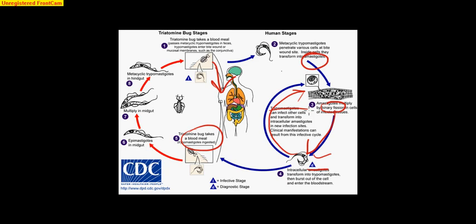Then this vector is going to take up another blood meal. So this is a different vector taking a different blood meal. Now this vector is carrying Chagas disease, and it can go on to infect another individual.